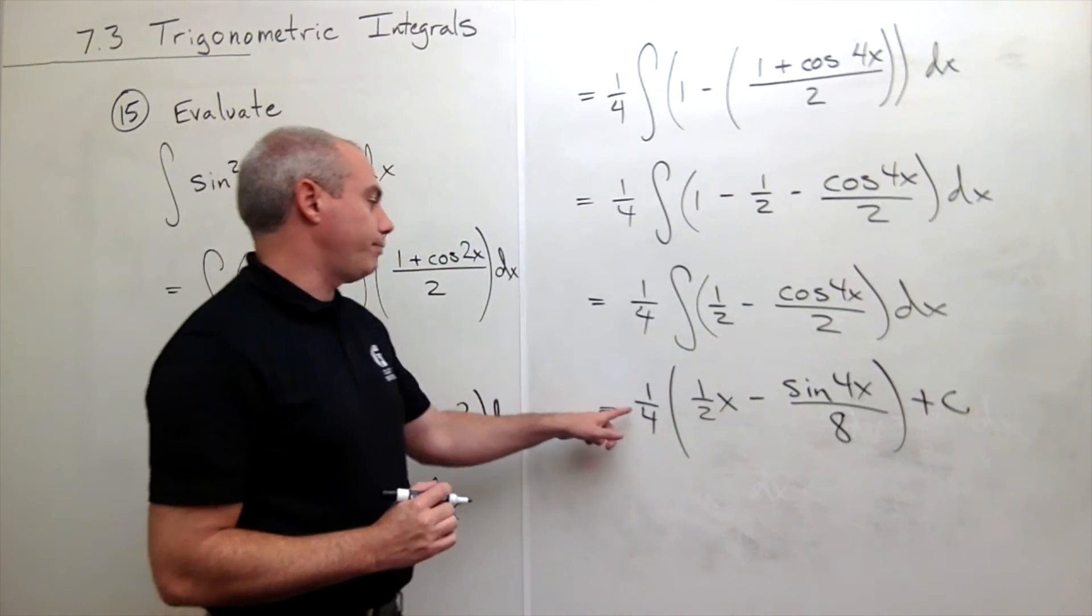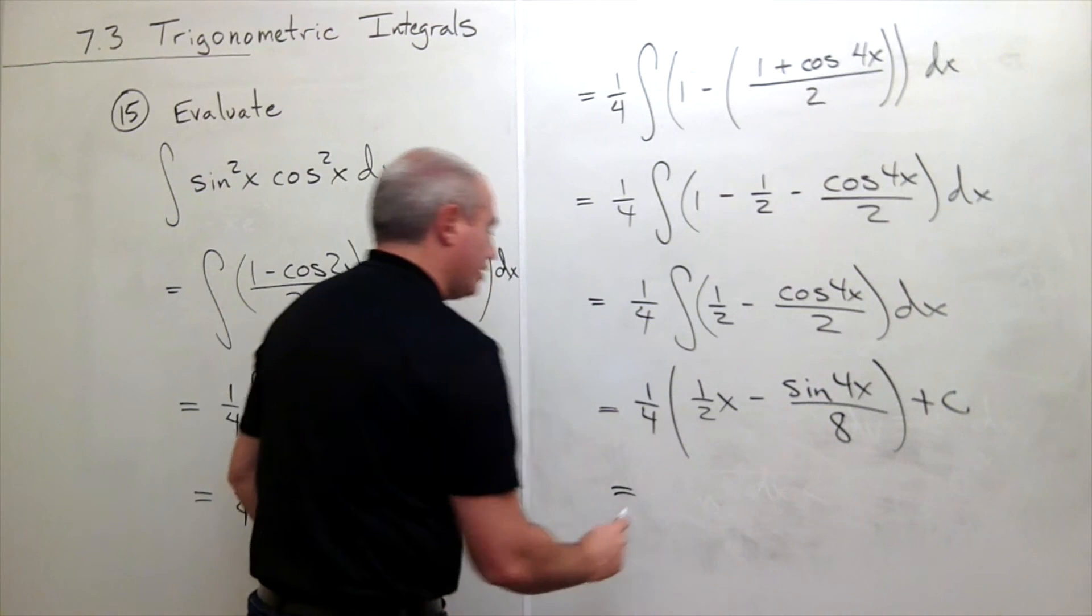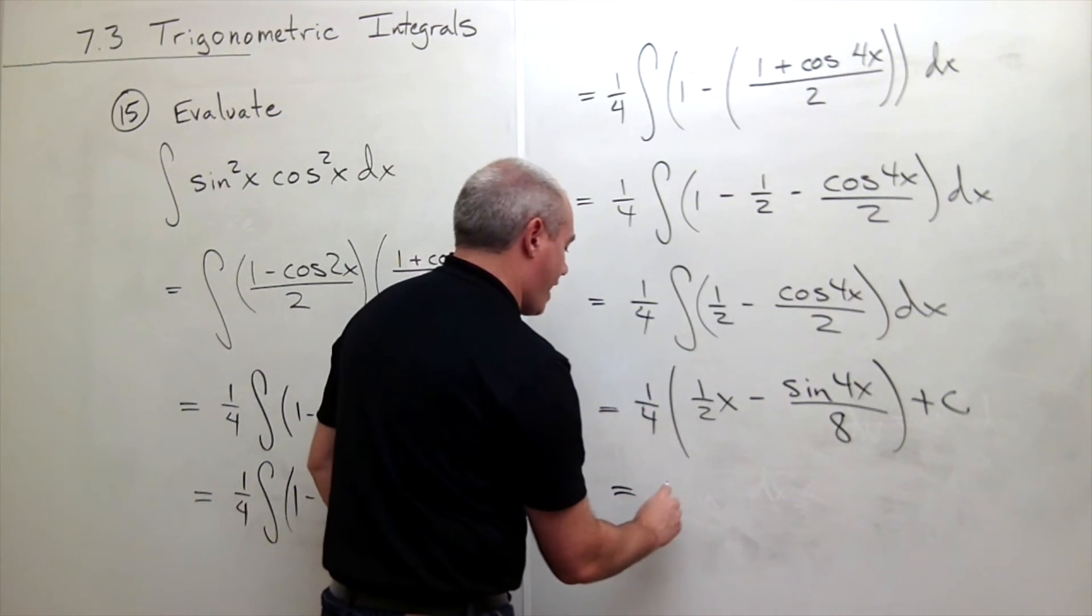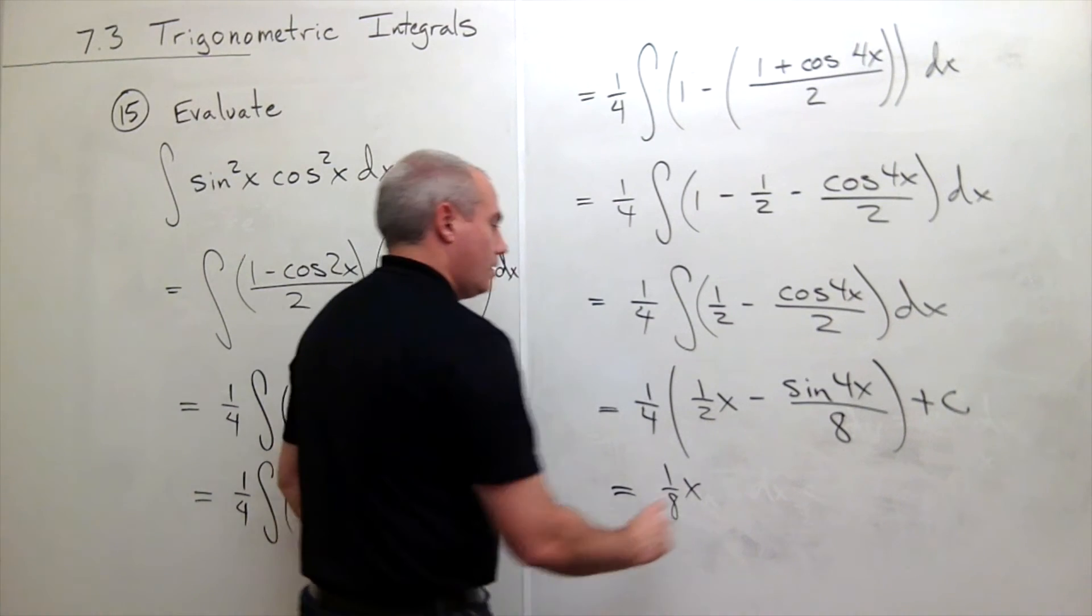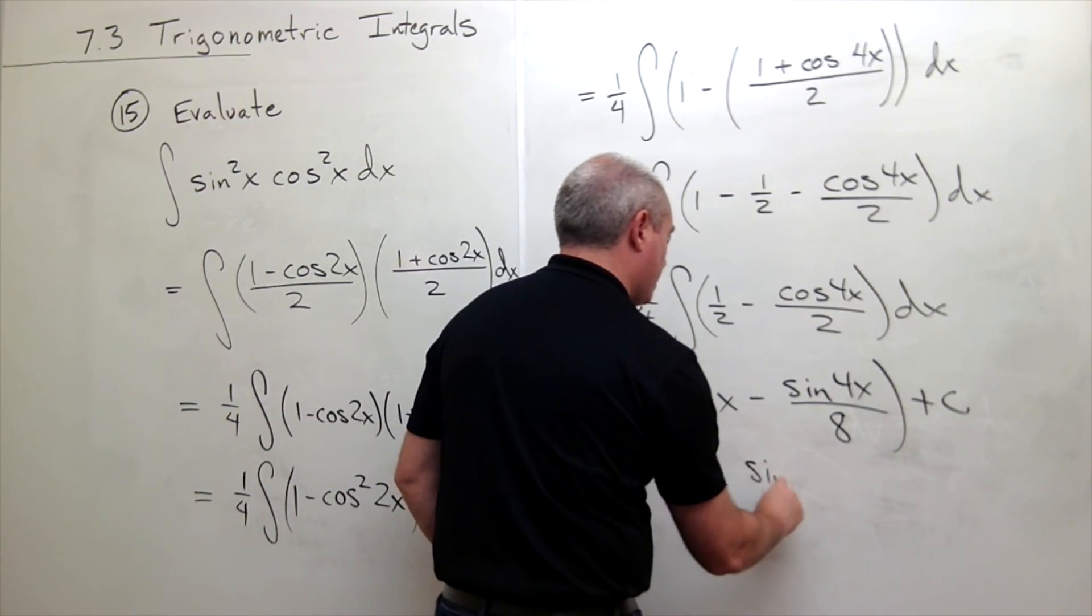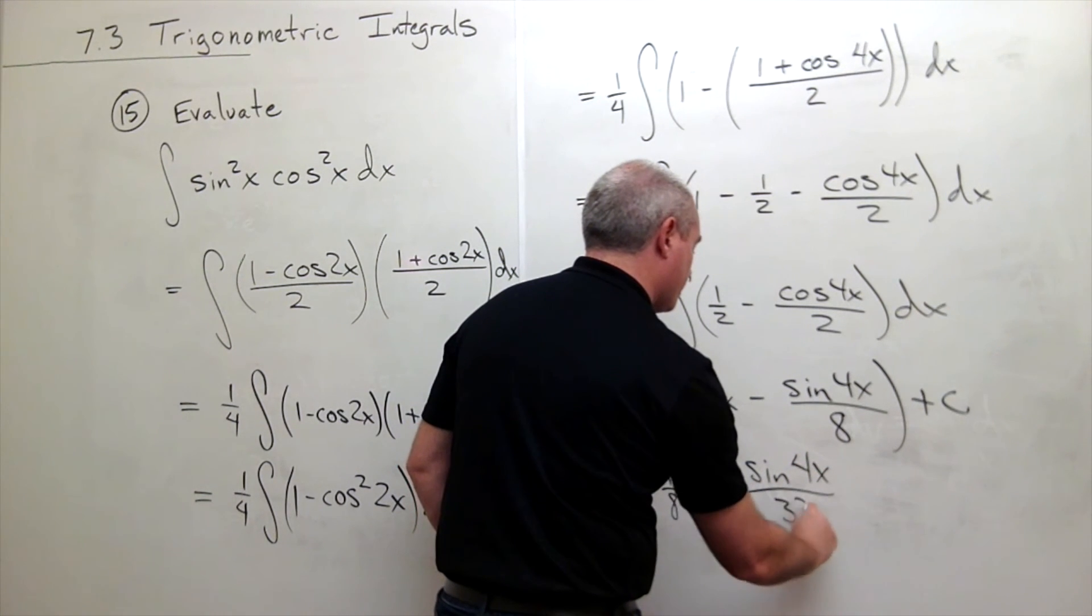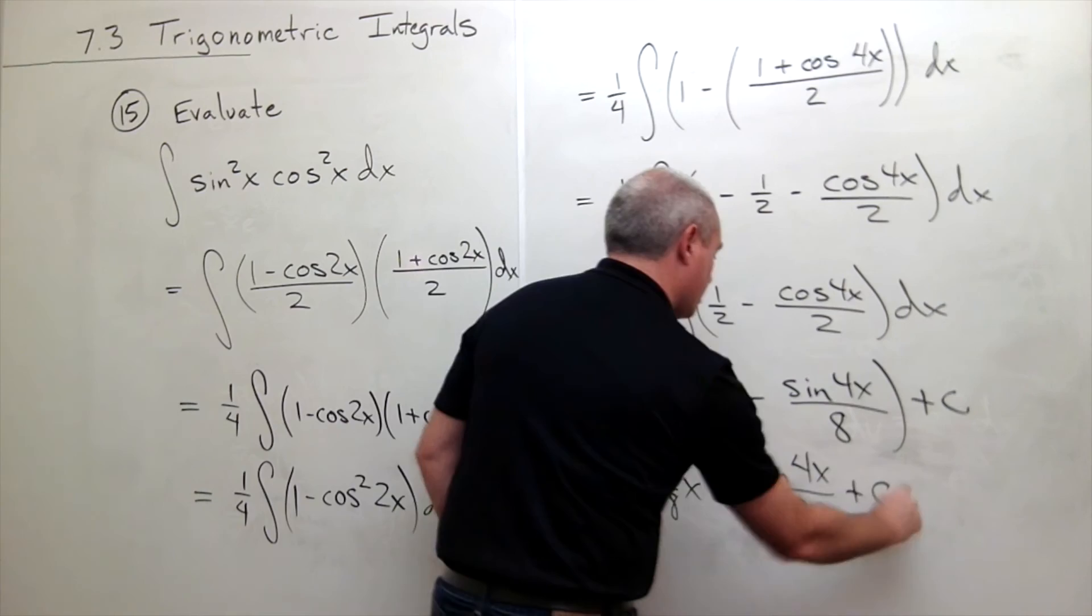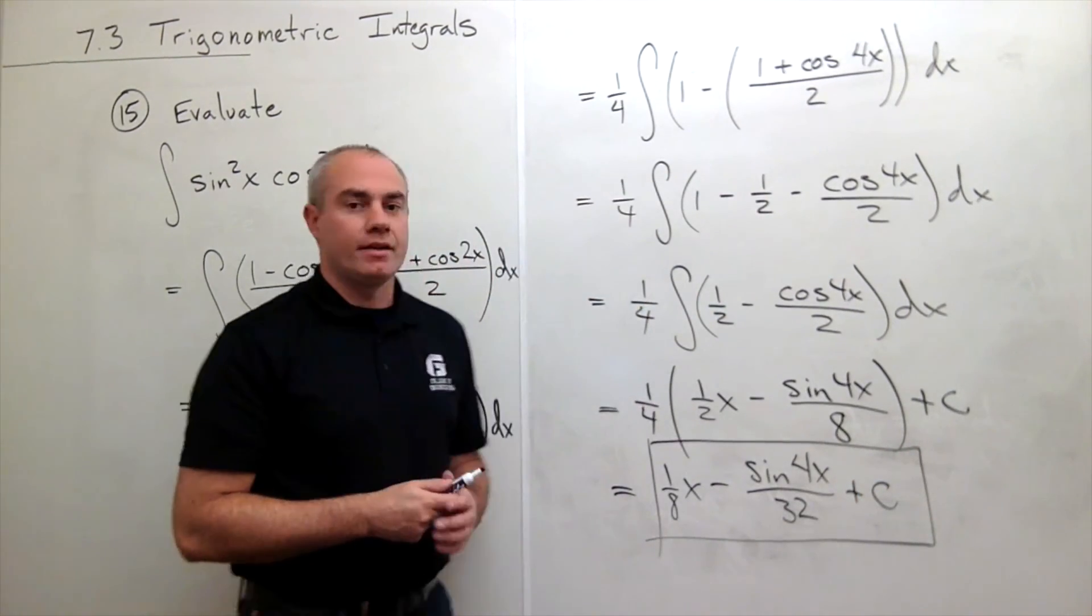Now I can multiply through by this 1 fourth, and I will be done. Then, 1 fourth times 1 half, I get 1 eighth x minus, 4 times 8 is 32, so I get sine of 4x over 32 plus c. And we are done.